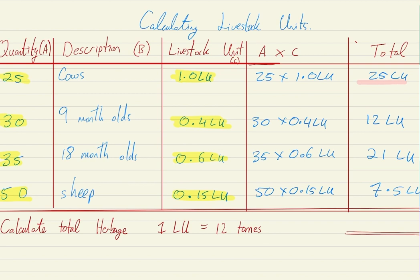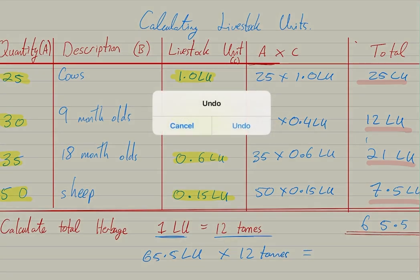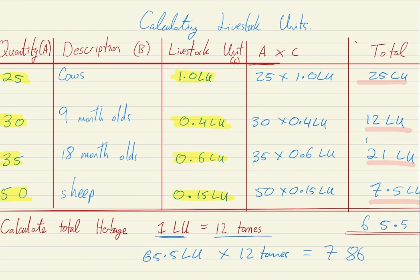Adding up our 25, 12, 21, and 7.5 gives us a grand total of 65.5 livestock units. When calculating our total herbage, each livestock unit is worth 12 tons, so to find the total tons of herbage needed — between grass for the summer months and hay and silage for winter — we multiply 65.5 livestock units by 12 tons, giving us a grand total of 786 tons of herbage.